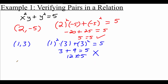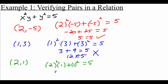Now we're going to check one more ordered pair: (2, 1). We're going to take our x and y and plug them in. So we've got 2 squared times 1 plus 1 squared, and we're checking to see if that's equal to 5. Well 2 squared is 4, and 4 times 1 is still 4. 1 squared is 1, and we're checking to see if that's equal to 5. Well 4 plus 1 is 5, so since we got a true statement that confirms that (2, 1) is in the relation.